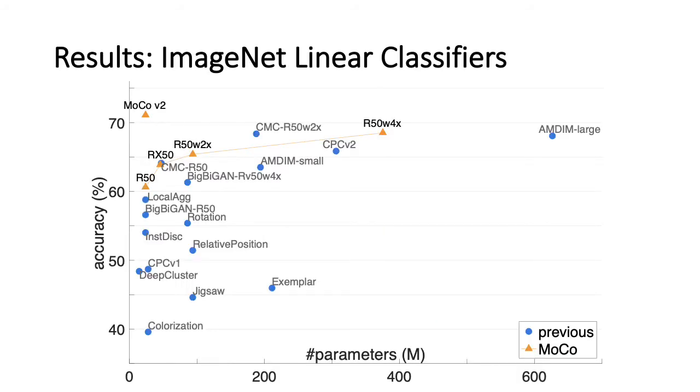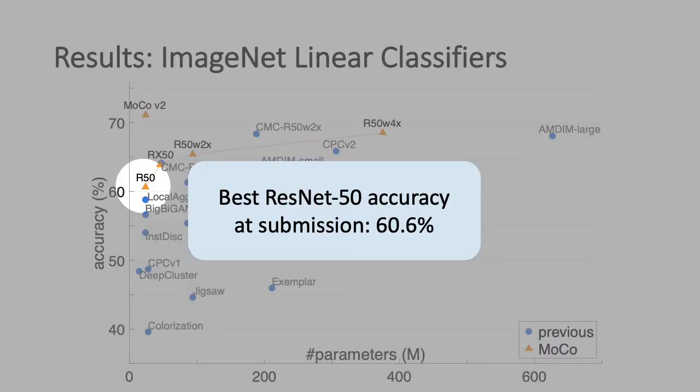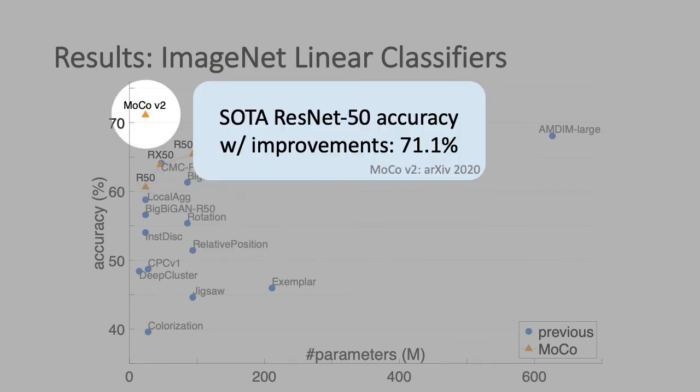Given the MoCo method, we first evaluate under the ImageNet linear classifier setting. Here the x-axis is the model size, and the y-axis is the accuracy. At the time of submission, our method has the best accuracy of the standard ResNet-50 model. With some improvement, we further achieve state-of-the-art accuracy of ResNet-50.